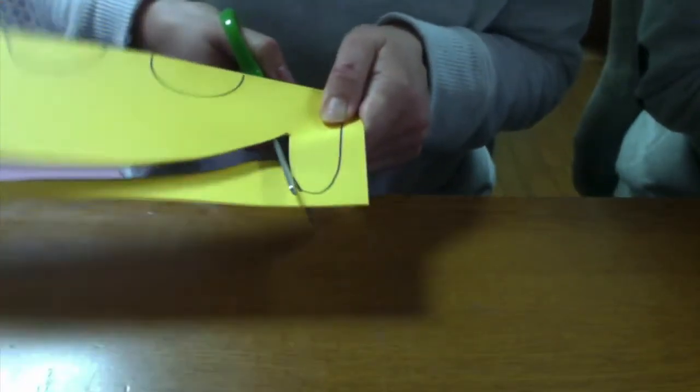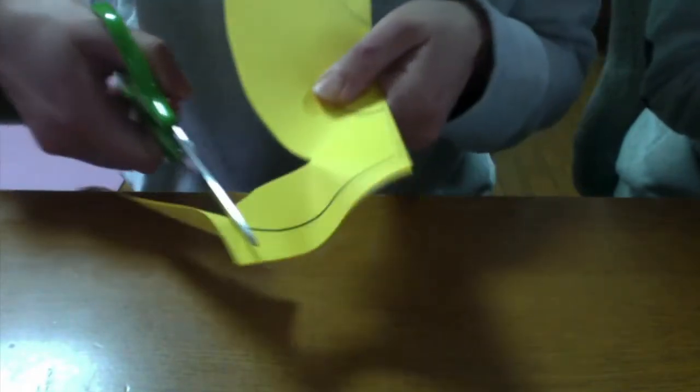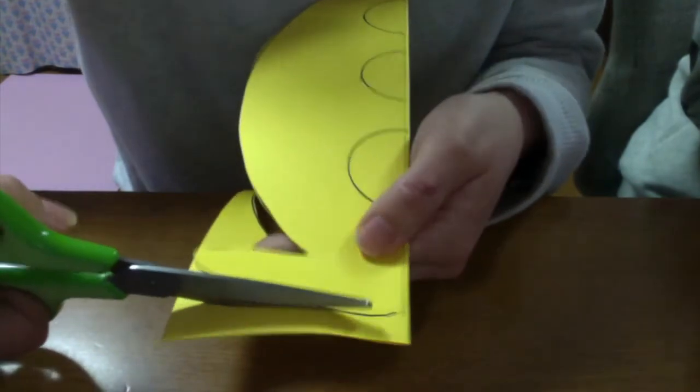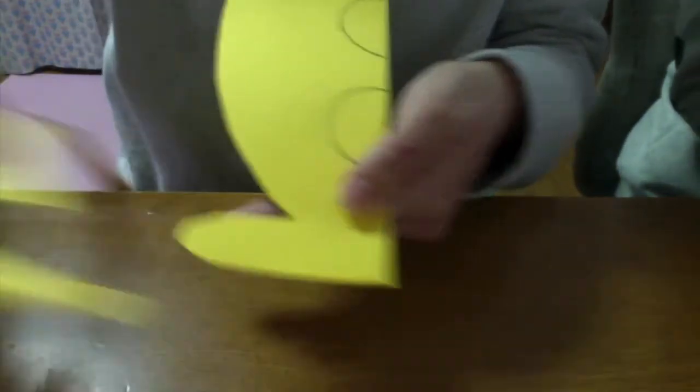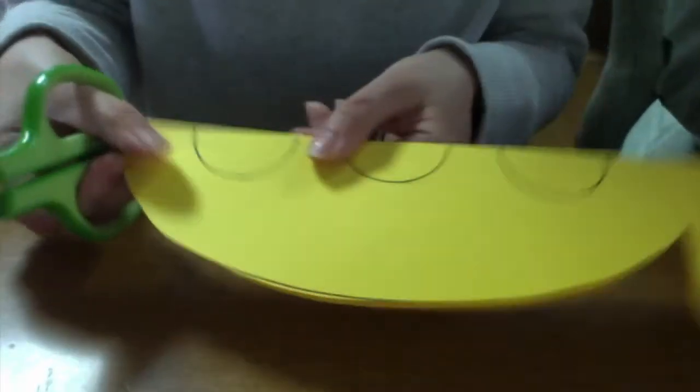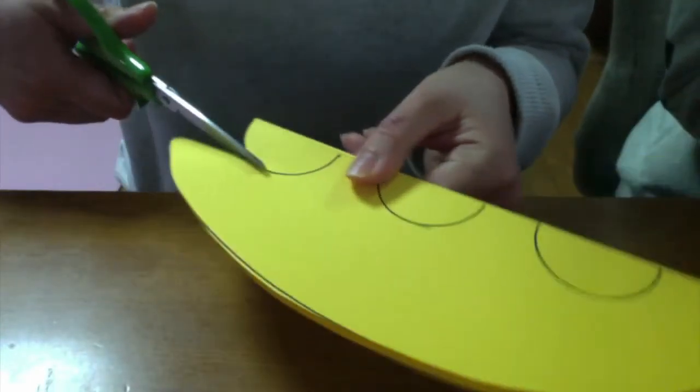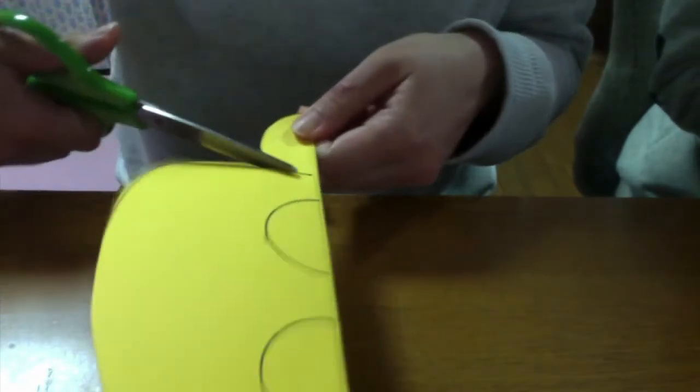Don't worry about making any mistakes because we won't see these black lines from the front side of the submarine. Cut out your windows too!